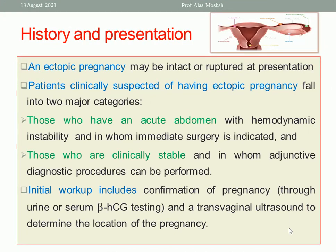Ectopic pregnancy may be intact or ruptured; a ruptured one may be acute or chronic. Clinical presentation may include patients with an acute abdomen with hemodynamic instability requiring immediate surgery — those with a ruptured ectopic — or patients who are clinically stable and in whom adjunct diagnostic procedures can be performed — those with an intact ectopic. A pregnancy test via urine or serum beta-hCG and a transvaginal ultrasound are essential.